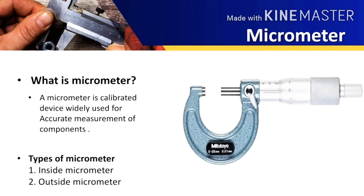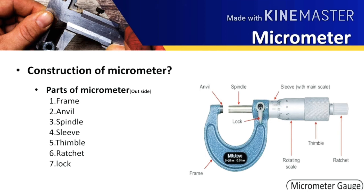A micrometer is a calibrated device widely used for accurate measurements. There are two types of micrometer: inside micrometer and outside micrometer. In this video we are going to see outside micrometer.